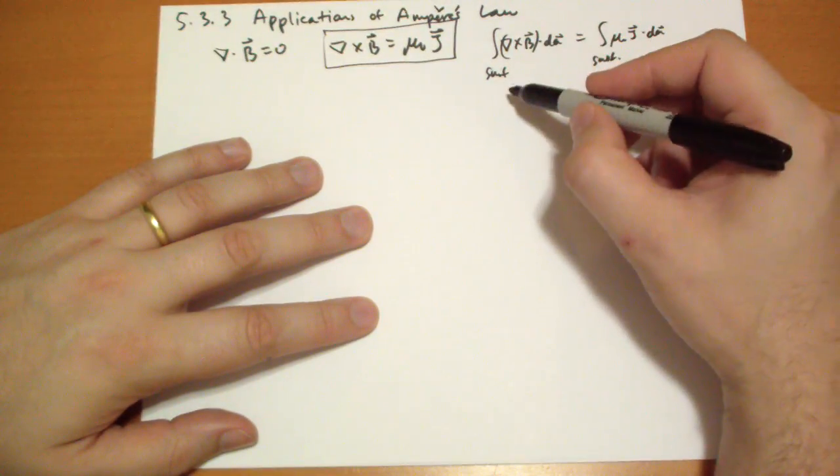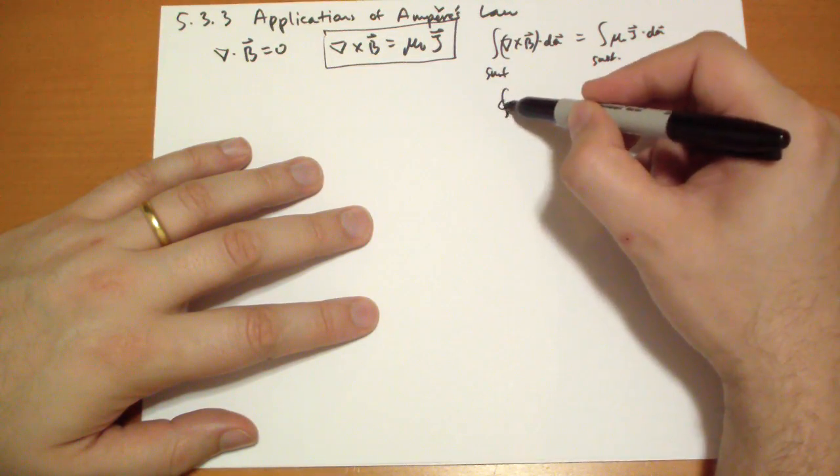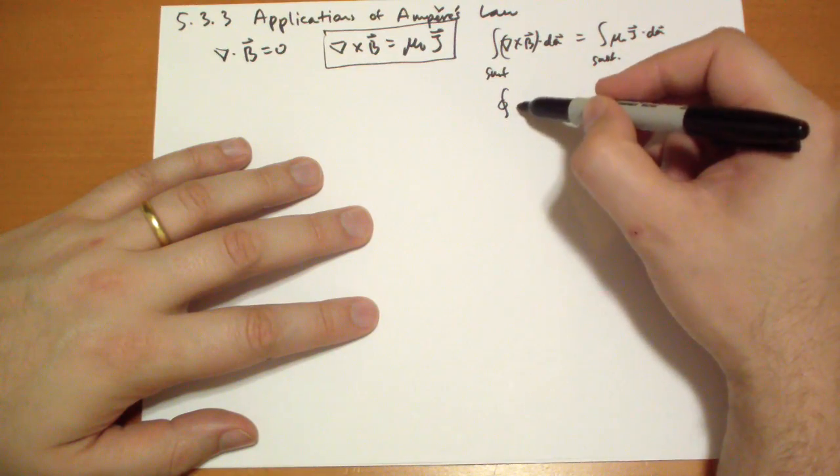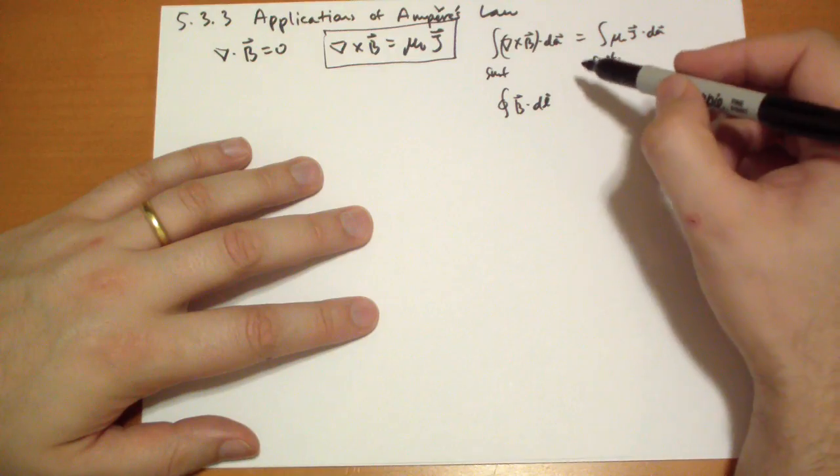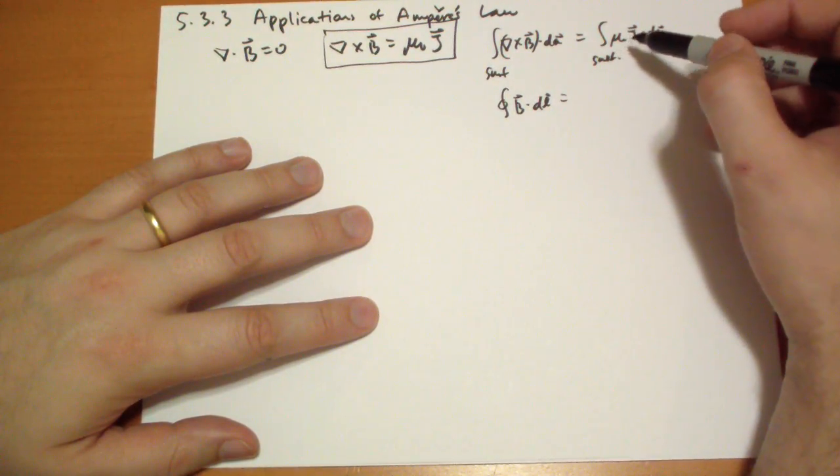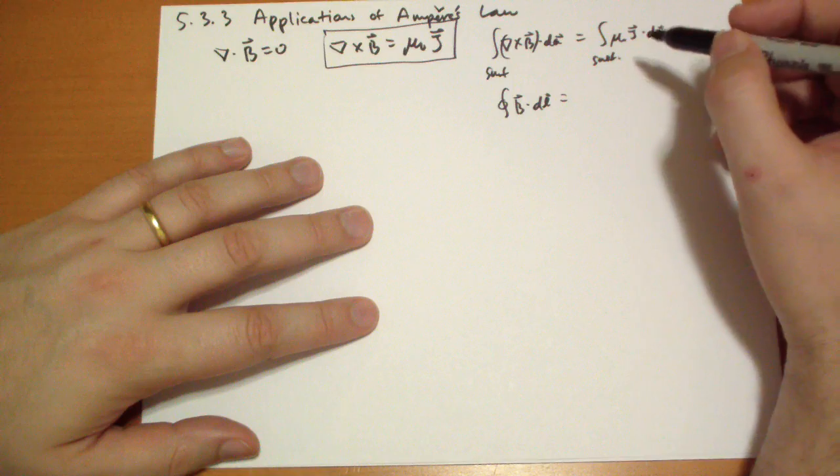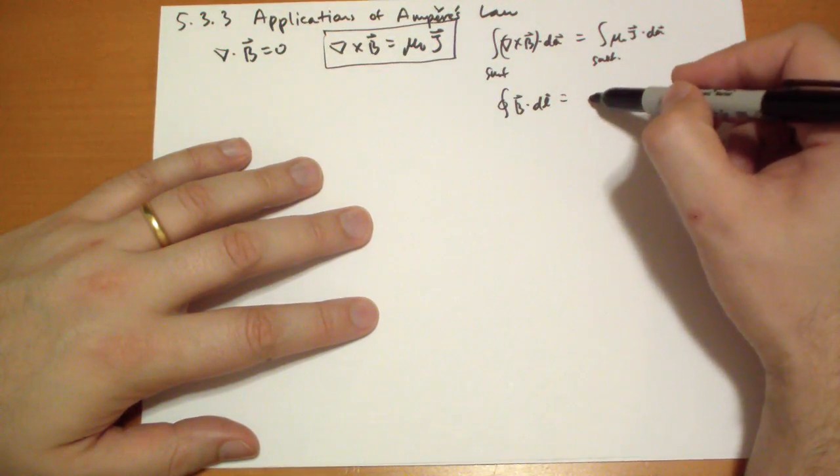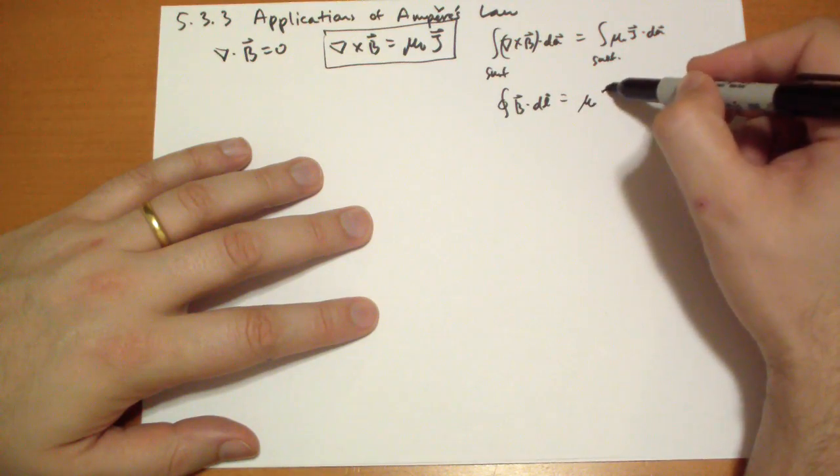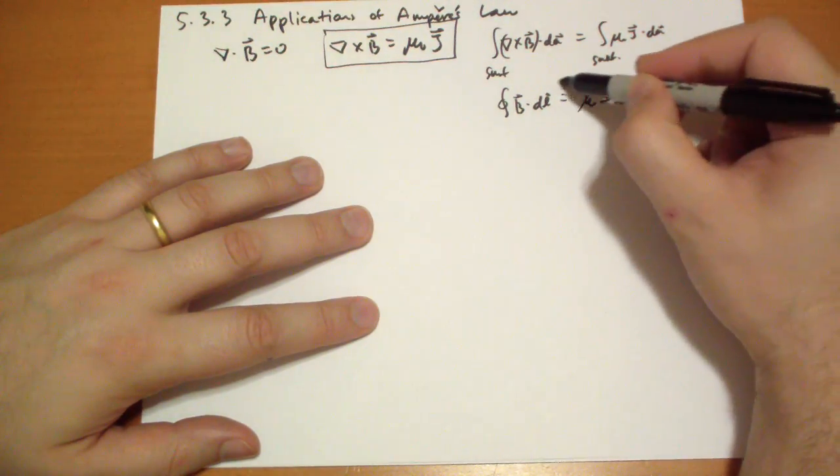Well, what's this? It's by Stokes Theorem, so we get the integral around the loop of B vector dot dL vector is equal to, well what's this? This is the total current within that area that we're looking at. So that's mu-naught times the enclosed current.